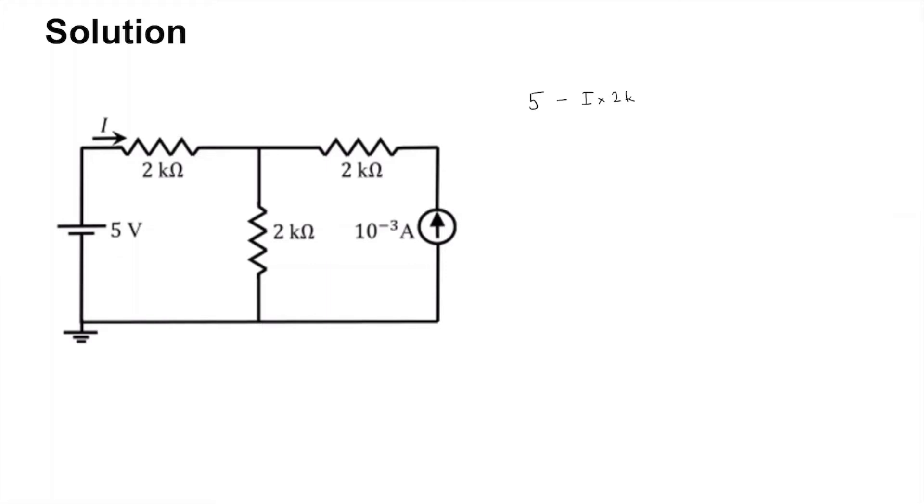And then you can say that the current flowing in this fashion is 1 milliamp. The current source is 1 milliamp, so you have I plus 1 milli flowing like that. And so the drop on the 2k resistor on this branch is I plus 1 milli times 2k is equal to 0.